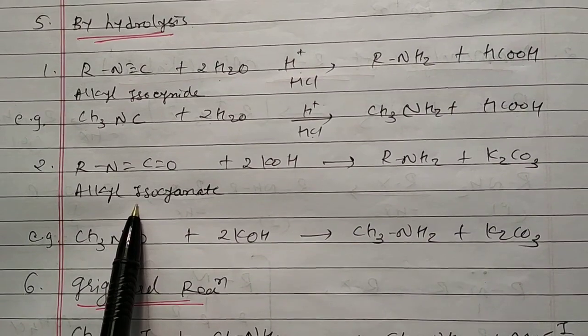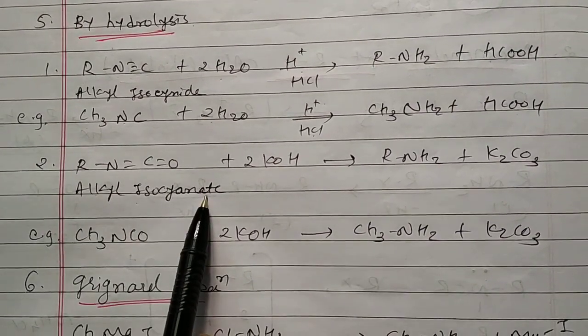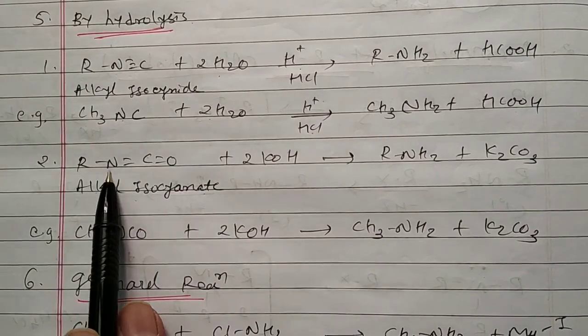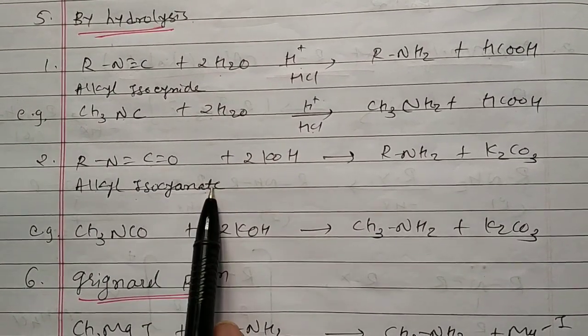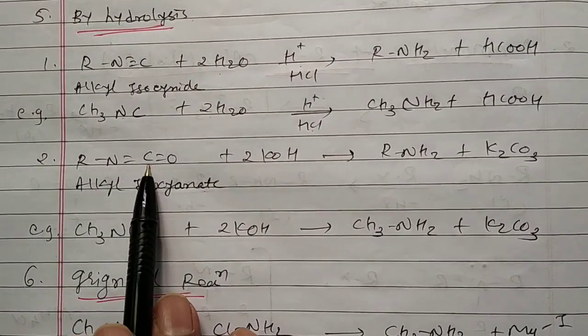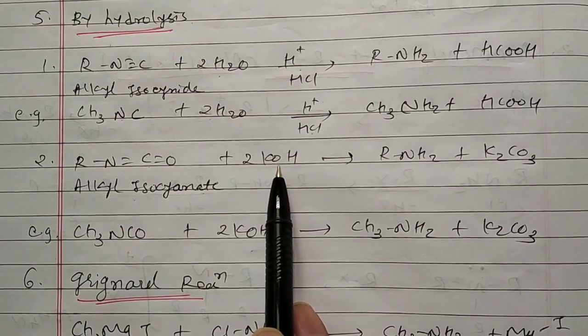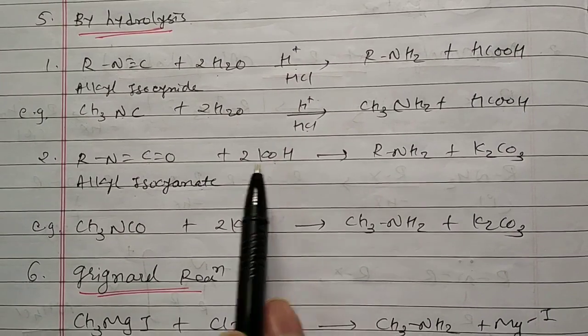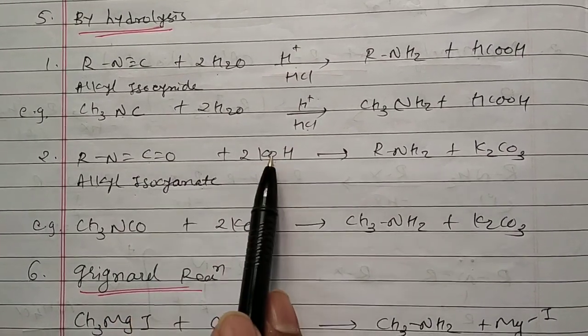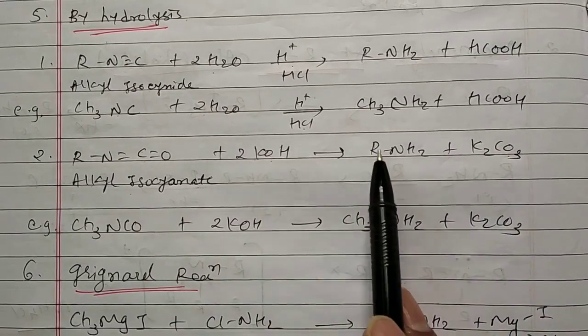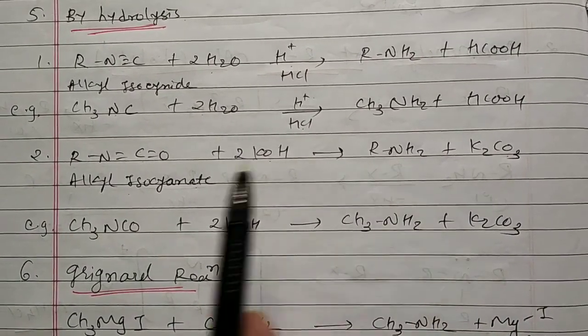Another hydrolysis, alkyl isocyanate. This is isocyanate, N-C double bond O, isocyanate R-N-C-O in the presence of strong base KOH. So in the presence of KOH, whatever reaction will occur, so from here CO and O, CO3 and 2K, K2CO3 is your byproduct and R-NH2 is your major product.